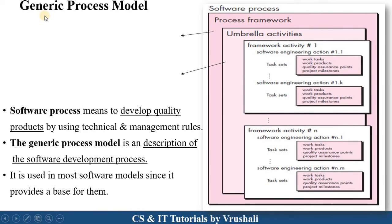The first point is the generic process model. Here in this diagram, this is the structure of the generic process model. First, there is a software process. Software process means developing a quality software product by using software engineering rules and technical and management rules. For performing this software process, the generic process model is used. It includes two types of activities: process framework activities and umbrella activities.